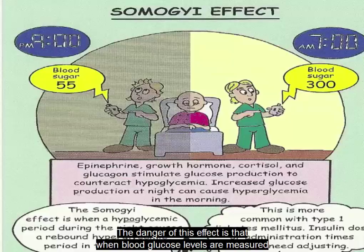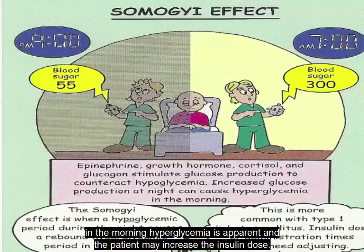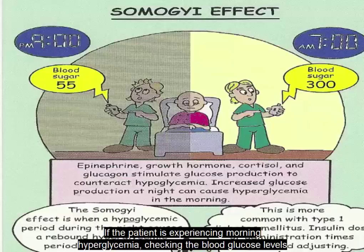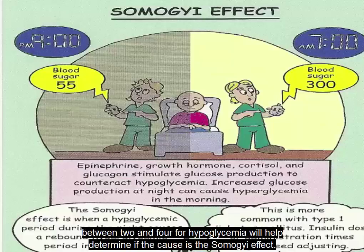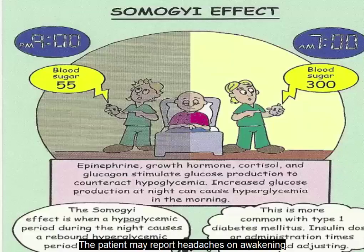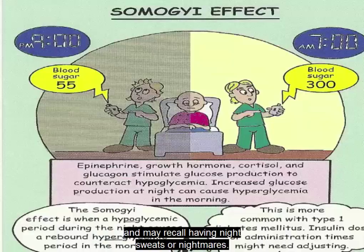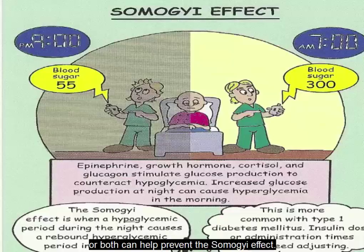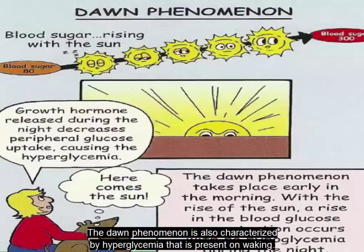The danger of the Somogyi effect is that when blood glucose levels are measured in the morning, hyperglycemia is apparent and the patient may increase the insulin dose. Checking blood glucose levels between 2 and 4 a.m. for hypoglycemia will help determine if the cause is the Somogyi effect. The patient may report headaches on awakening and may recall having night sweats or nightmares. A bedtime snack, a reduction in the insulin dose, or both can help prevent the Somogyi effect.